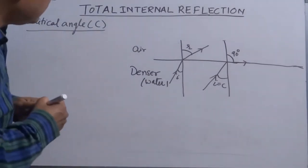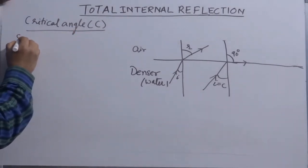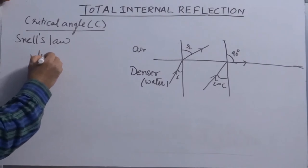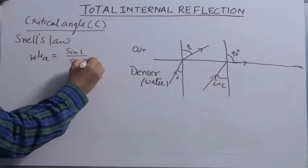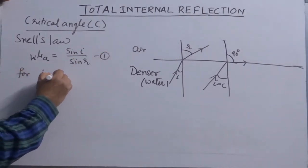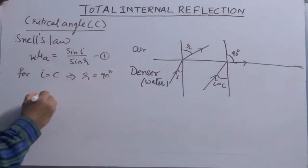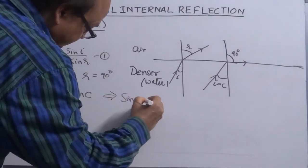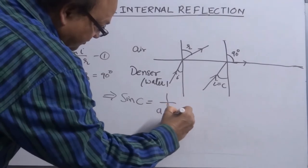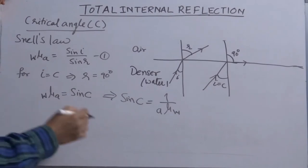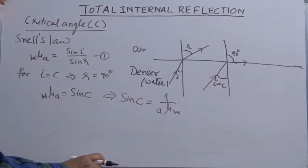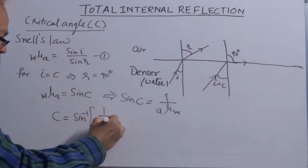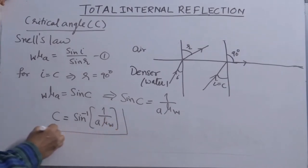How do we calculate the critical angle? This is refraction, so it follows Snell's law completely. Snell's law for water to air gives the refractive index as sin i over sin r. For i equal to c, r becomes 90 degrees. So w_mu_a equals sin c, and therefore sin c equals 1 over a_mu_w. This is the formula for the critical angle.